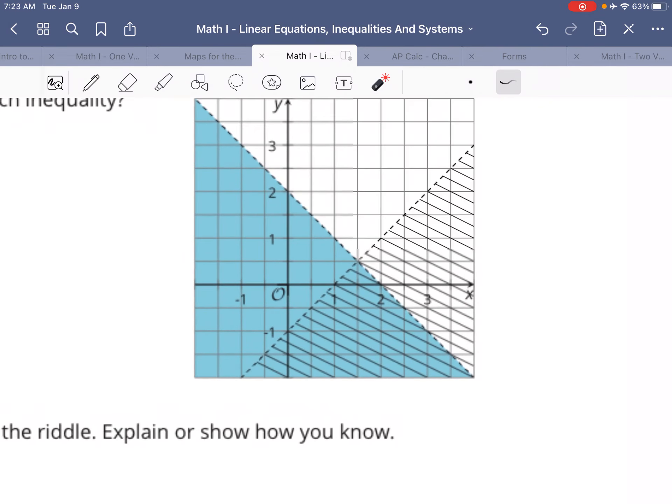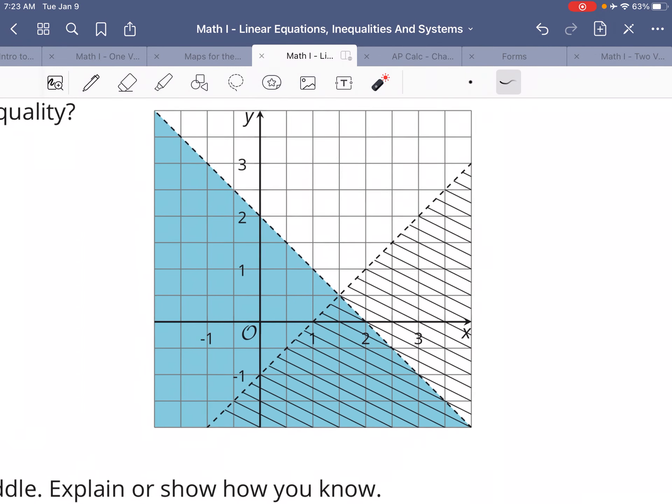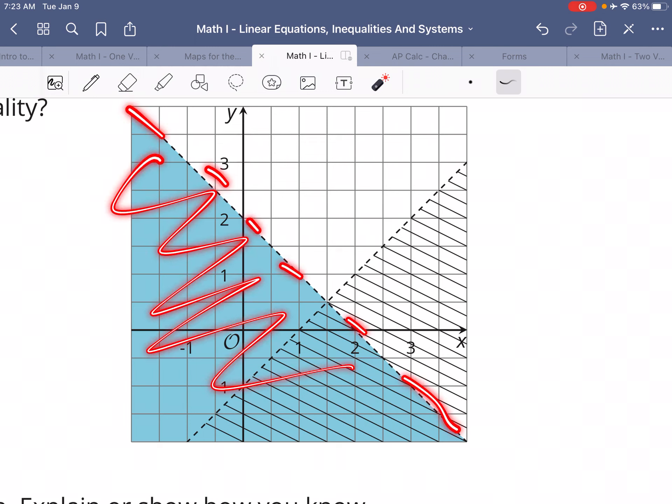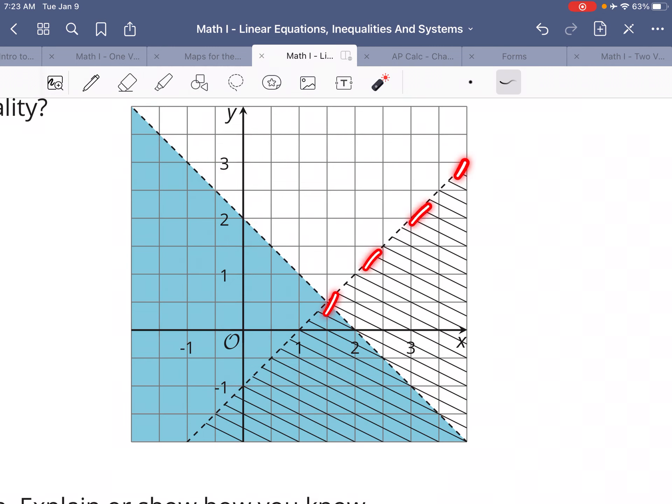If you take a look at this right here, this is a good example of what I mean. We have two different inequalities graphed here, this one with this shaded region and this one with this shaded region. Now remember, dashed line means points on the line are not solutions. Solid line means that points on that line are solutions.